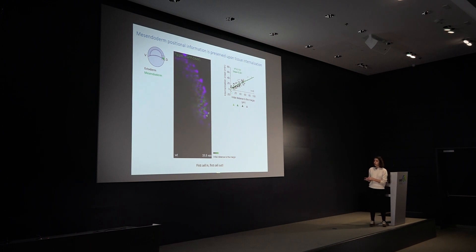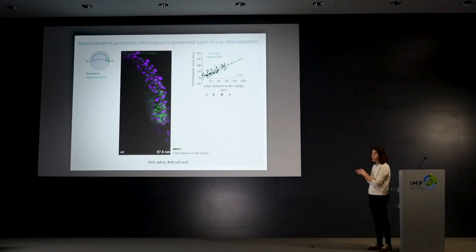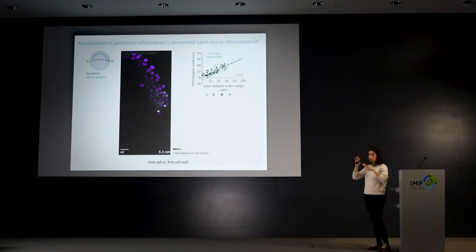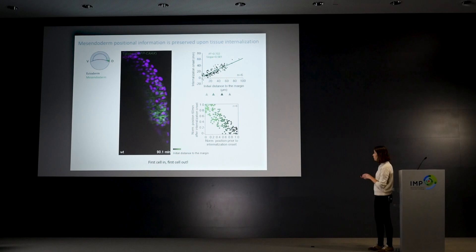So there is basically one simple rule: first cell in, first cell out. The first cells to go in are also the first to start migrating upwards. This is interesting because if you have such tight coupling between the position of cells and the timing of internalization, you're basically just translating the gradient from the outside to the inside.